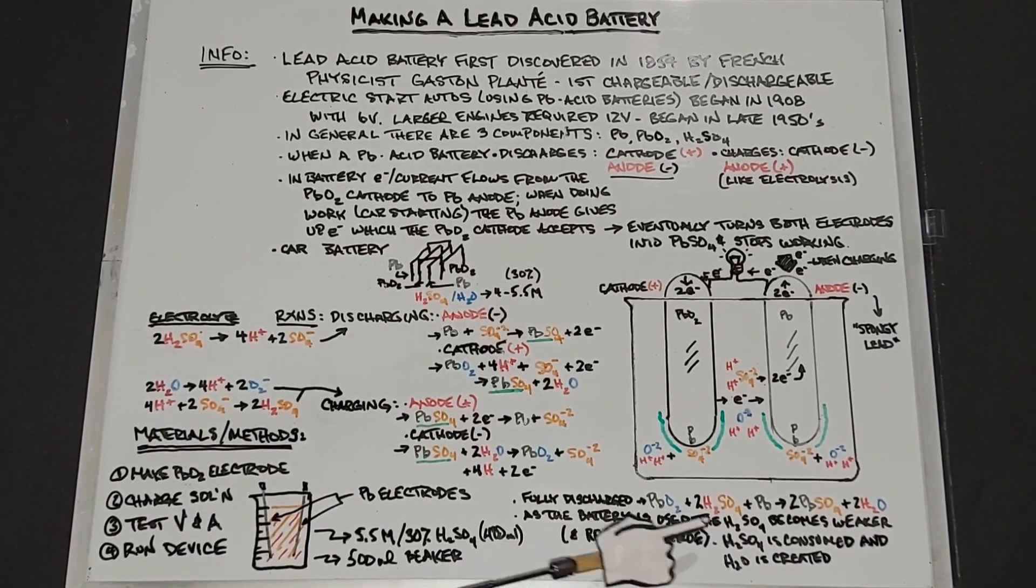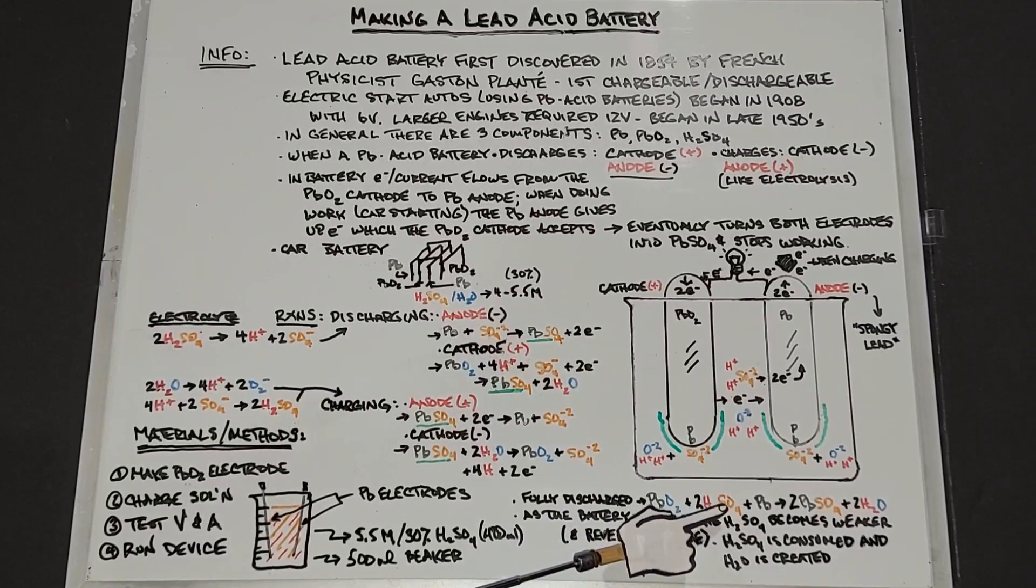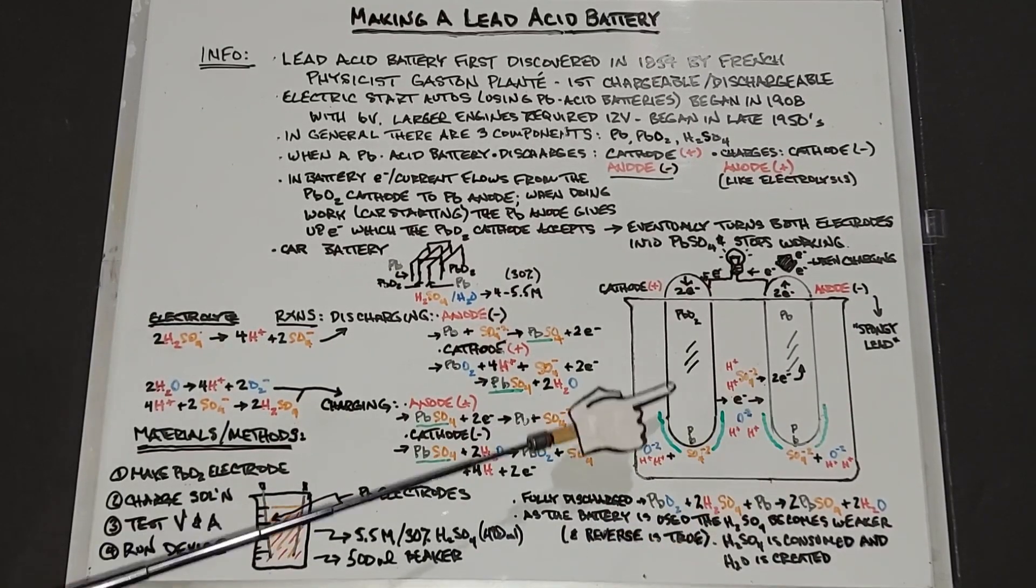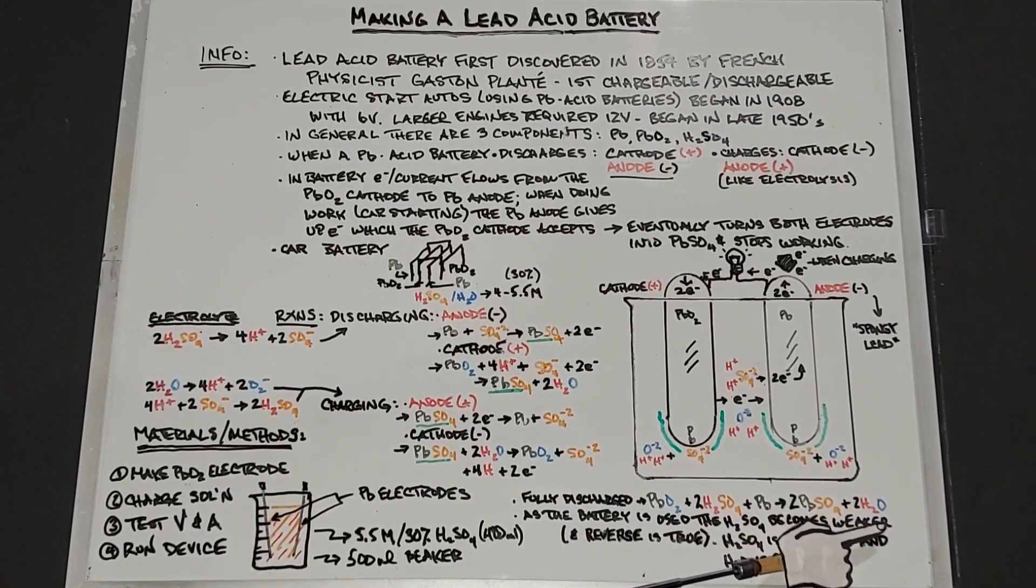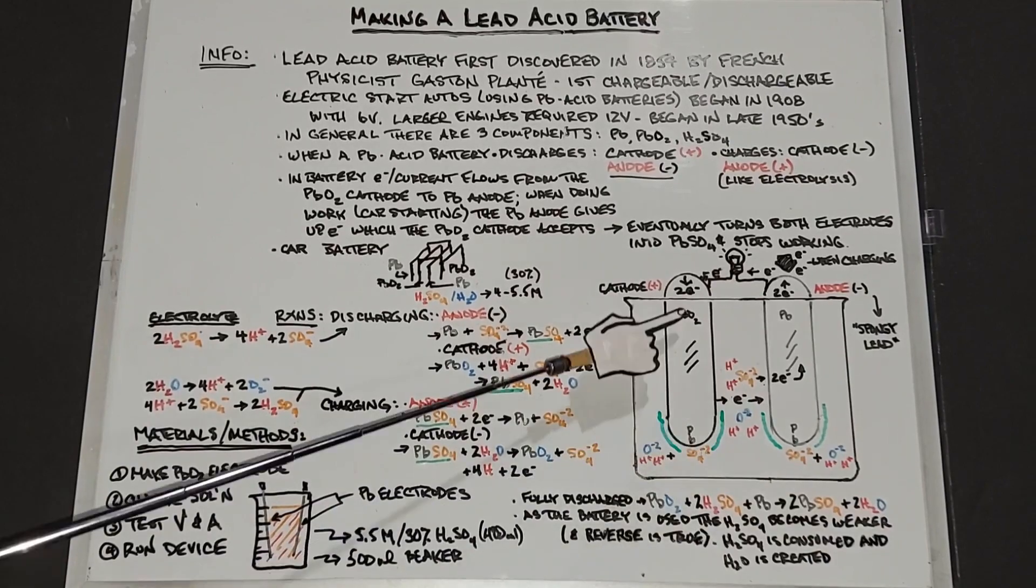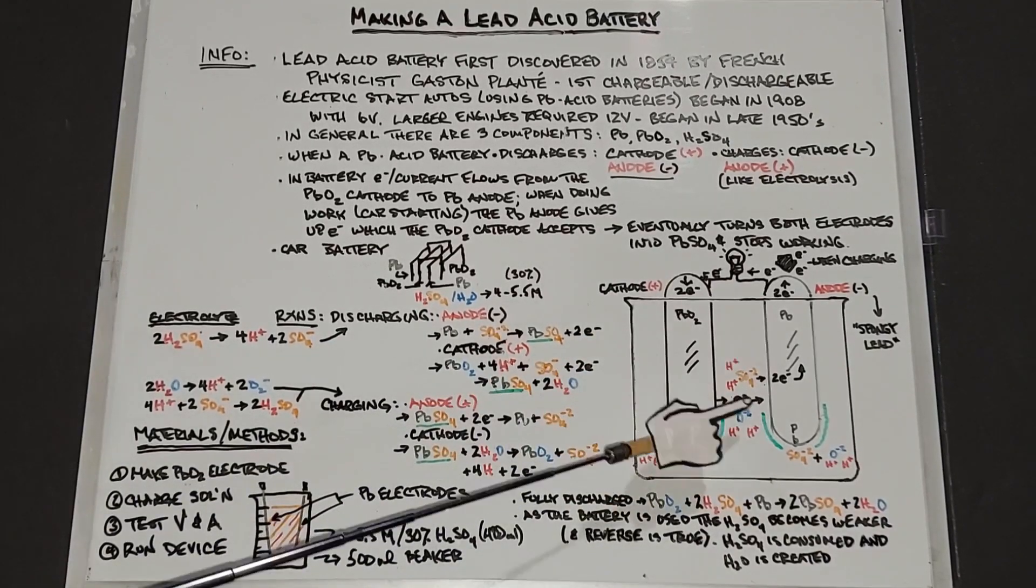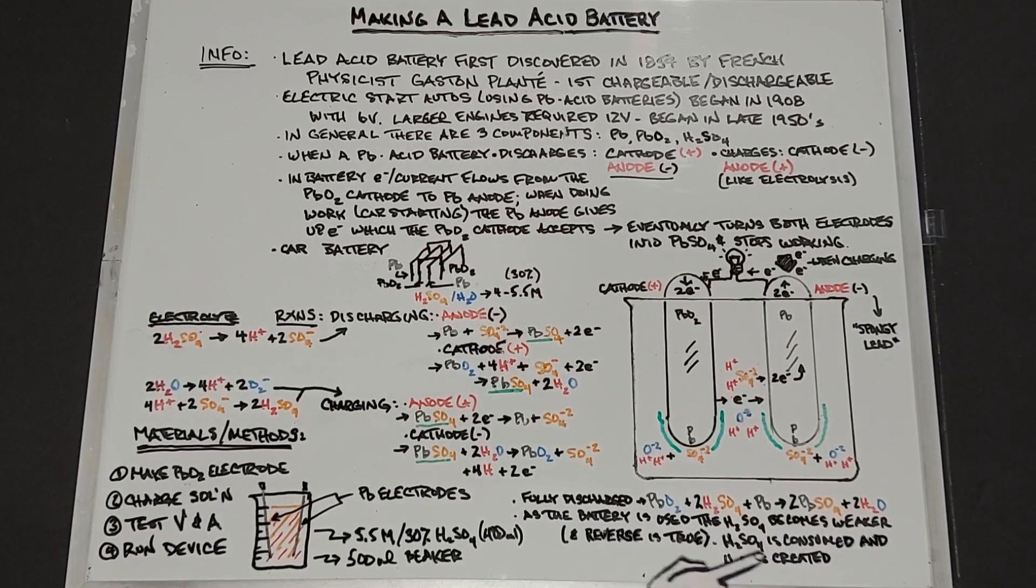So if you let this fully discharge, you have lead dioxide plus two sulfuric acids plus lead yields two lead sulfate ions plus waters. Eventually this will turn into water. As the battery's being used, the sulfuric acid becomes weaker. The reverse is true, the sulfuric acid is being consumed and water is being created.